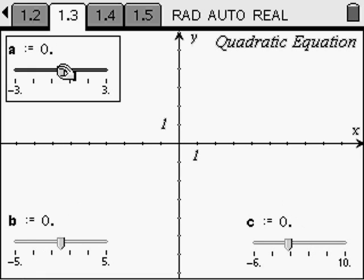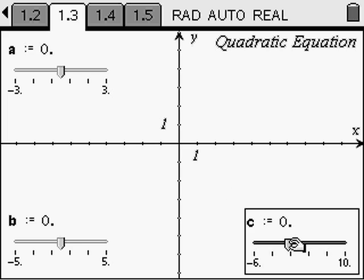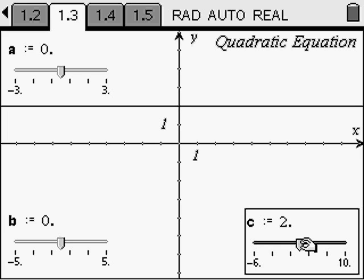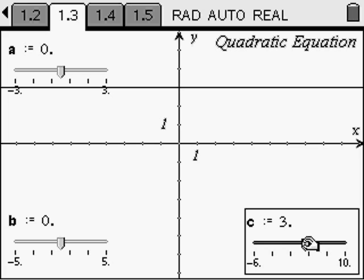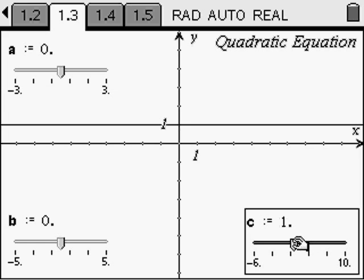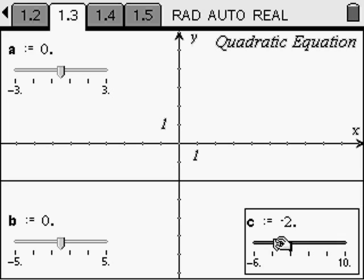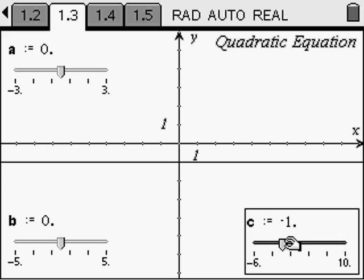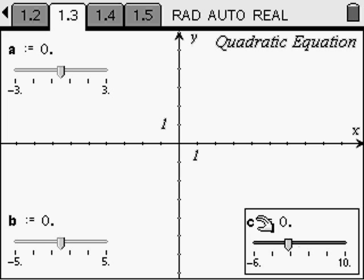Now what happens if a is zero? It appears that the graph is completely gone, but in fact it's still there. If we adjust the c value, it's a straight line, c equals three, two, one, and negative numbers. But at this point, in reality, it's not a quadratic equation anymore if the coefficient in front of a is zero. It has to be something besides zero.